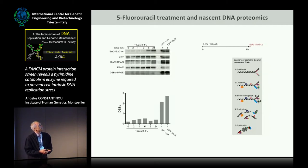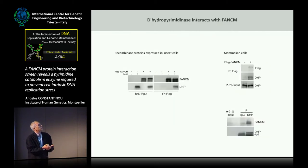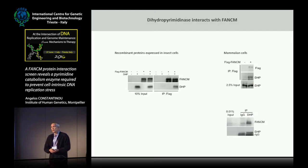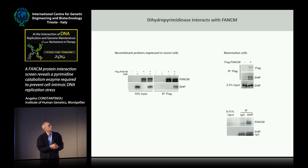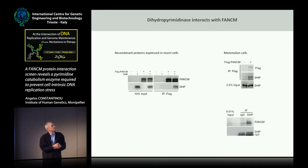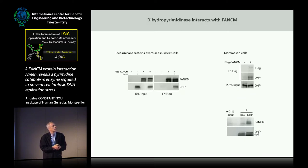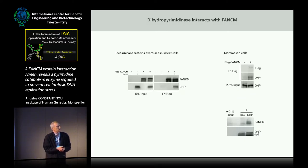We were motivated to pursue this further and first verified whether the two proteins can indeed associate. FANCM and DHP, short for dehydropyrimidinase, were co-expressed in insect cells, and we could pull down DHP with flag-tagged FANCM. We could also pull down endogenous DHP from human cells expressing flag-tagged FANCM. Reciprocally, we could pull down endogenous FANCM with an anti-DHP antibody.